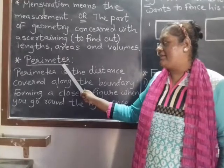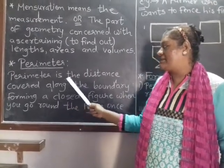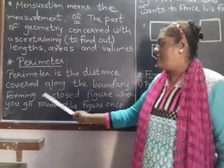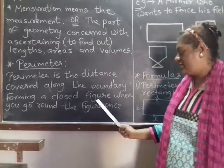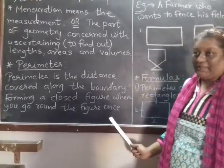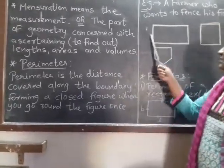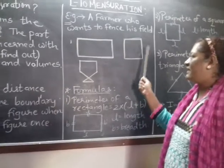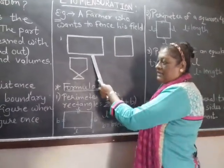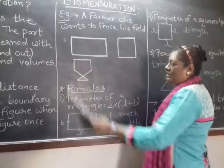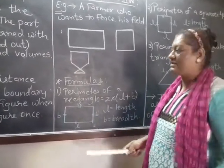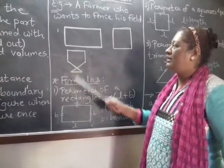What do we mean by the perimeter? Perimeter is the distance covered along the boundary forming a closed figure when you go around the figure once. Closed figure means it should be closed from all the four sides or five sides or six sides. Whatever the figure is given, it should be closed from all the sides. And perimeter is nothing but the distance that is covered along the boundary.